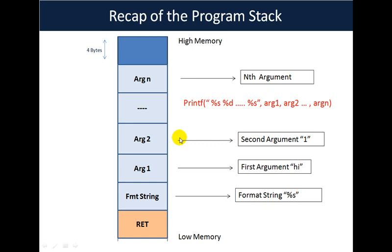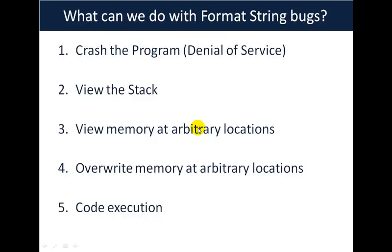Coming back to the format string part, the next question is what can we do with format string bugs. There are a couple of things we can do. The first is crash the program, secondly view the stack — we've done a little bit of that in the last demonstration — then view memory at arbitrary locations. Four would be overwriting memory once again at arbitrary locations, and finally five is some sort of code execution happening. For the rest of the video series we will pick up each one of these individually and see how we can cause these using format string bugs.